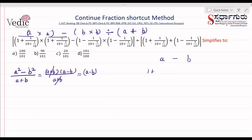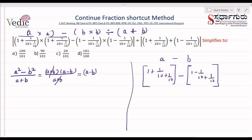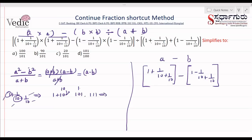What is a? The value of a is 1 plus 1/10 plus 1/10. To solve this, first take the numerator and denominator: 1 and 10. The whole number is 10, so write 10 above 10. Multiply: 10 times 10 is 100, plus 1 is 101. Then the next whole number is 1. Write 1 above 101: 1 times 101 is 101, plus 10 is 111. So the answer is 111 divided by 101.